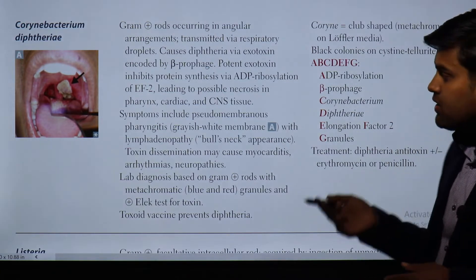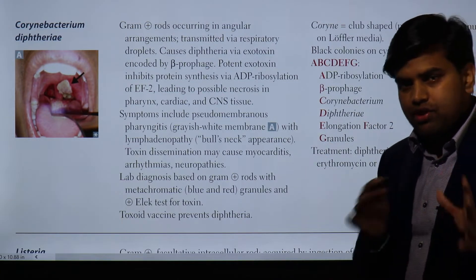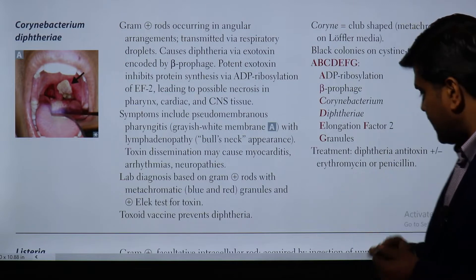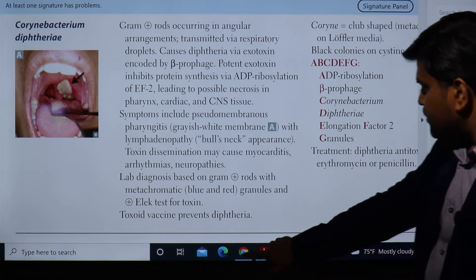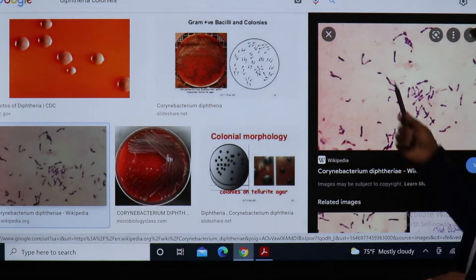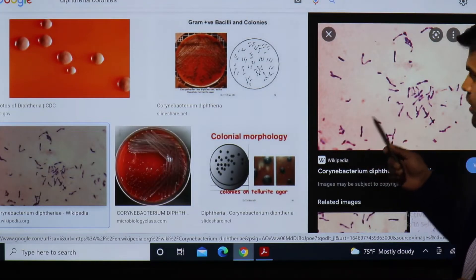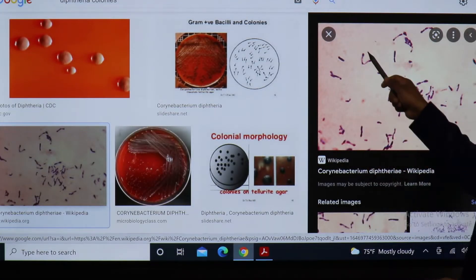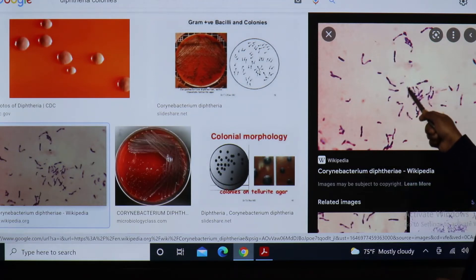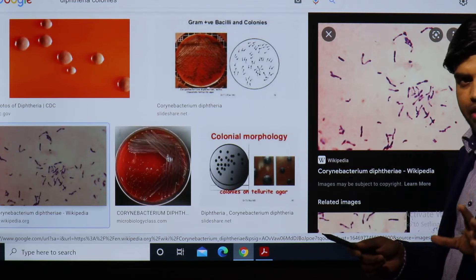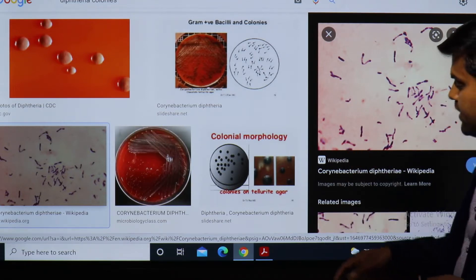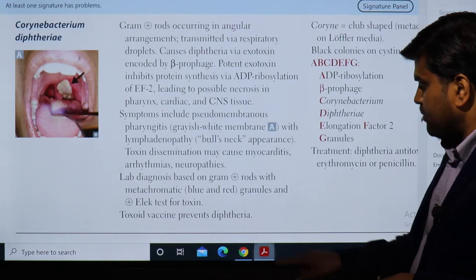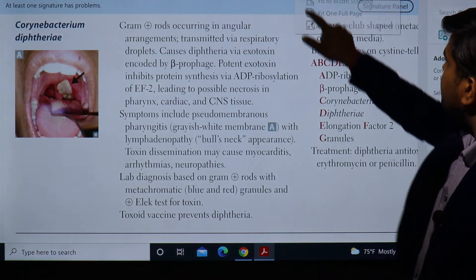In common microbiological terminology, this angular arrangement is known as the Chinese letter pattern. If you see the organism on gram stain, it will appear like Chinese letters. You can see here this is the gram stain of Corynebacterium diphtheriae showing this arrangement - it is commonly known as the Chinese letter appearance.